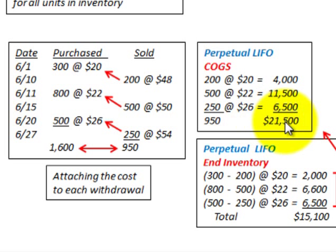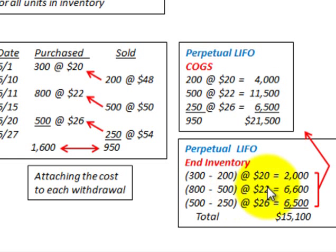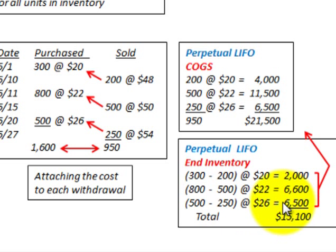Summing those amounts, total cost of goods sold under perpetual LIFO for the 950 units is $21,500. For ending inventory: of the original 300 units, we used 200, so 100 remain at $20 for $2,000. Of the 800-unit batch, we used 500, so 300 remain at $22 for $6,600. Of the 500-unit batch, we used 250, so 250 remain at $26 for $6,500. Total ending inventory is $15,100.